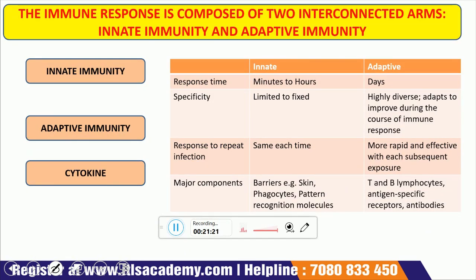The immune response is composed of two interconnected arms: innate immunity and adaptive immunity. Innate immunity consists of physical, chemical, and cellular defenses against pathogens. Its main purpose is to immediately prevent the spread of foreign pathogens throughout the body. Innate immunity is present since birth or derived from the mother during fetal development, and involves the various chemical and physical barriers as the first line of defense. Adaptive or acquired immunity is the immunity which an individual acquires by facing various infections throughout life.